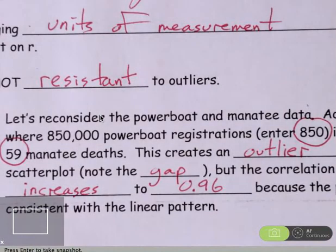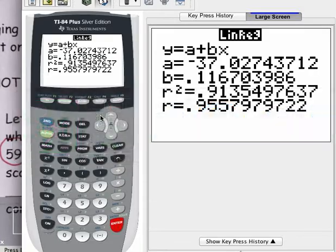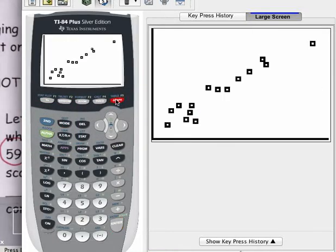Because that point is consistent with the linear pattern. Previously, when we calculated the correlation up in example number 1, the correlation we got was 0.94. So all we have done by including another point, even though it's an outlier, it is still a point that follows the general linear trend in that graph. Of course, there's not a whole lot that it can increase because we can't increase over 1.